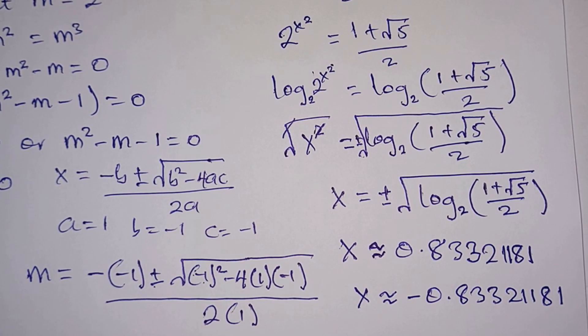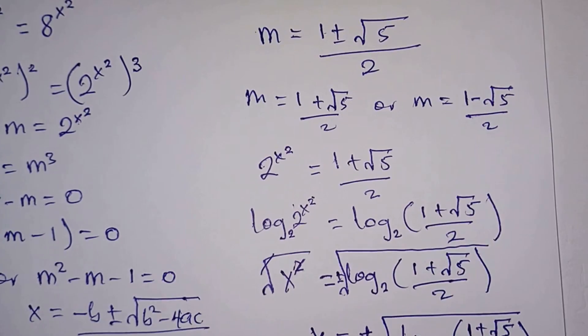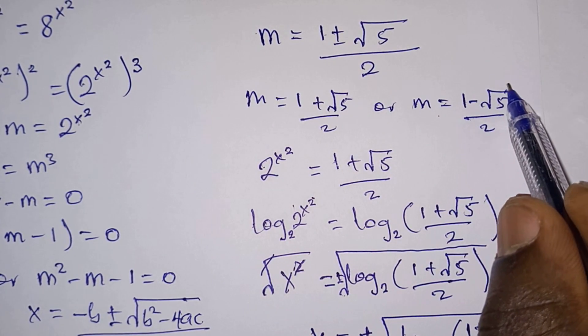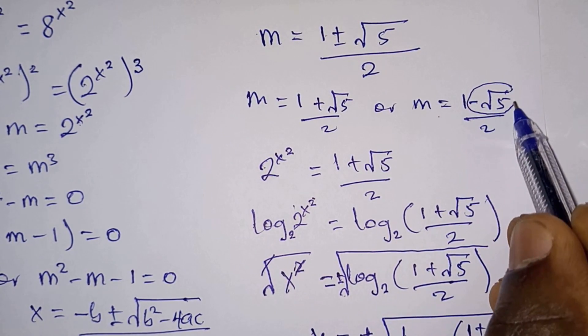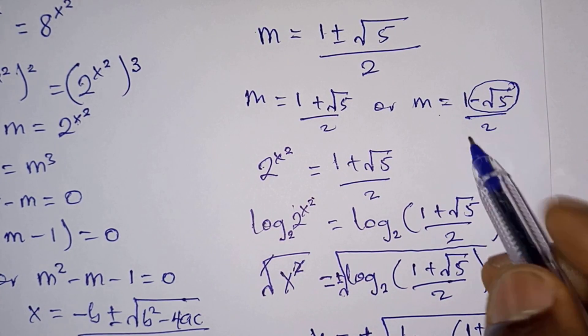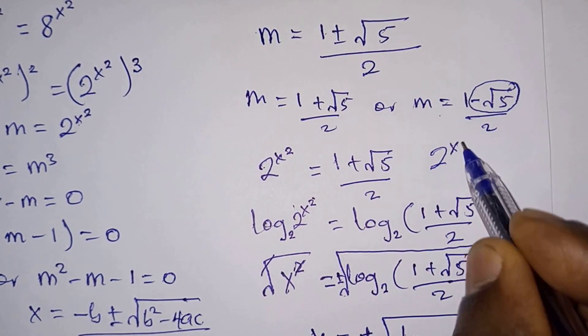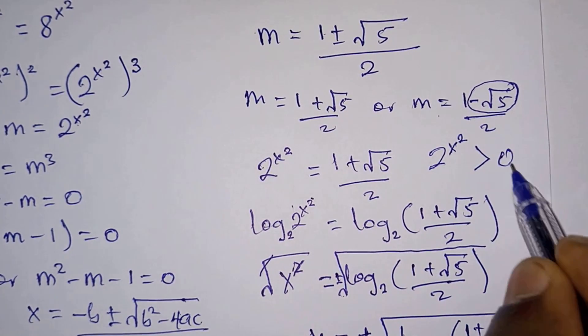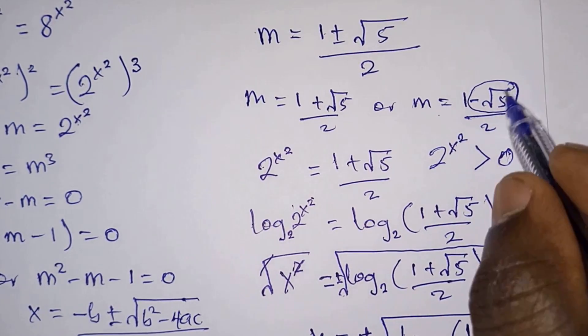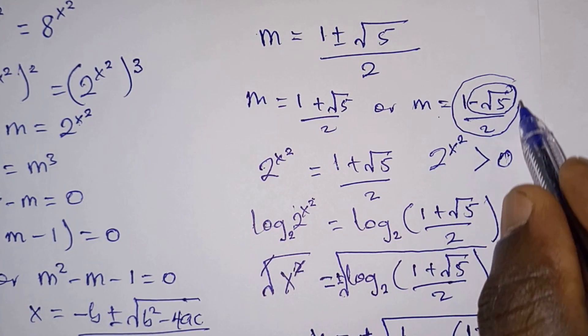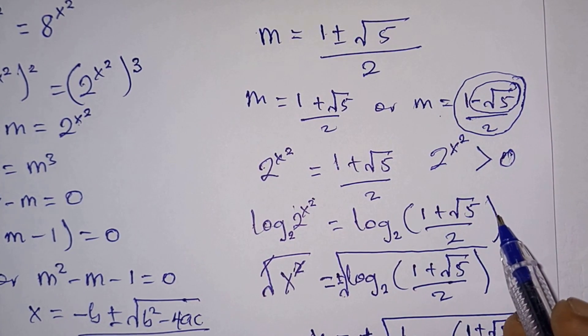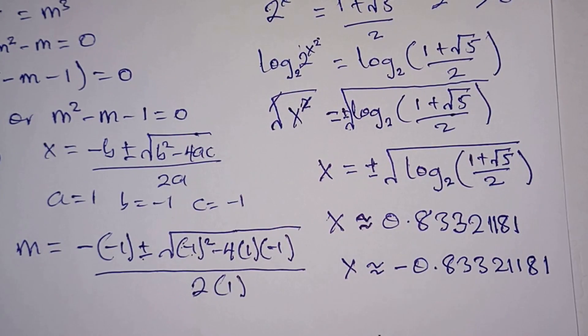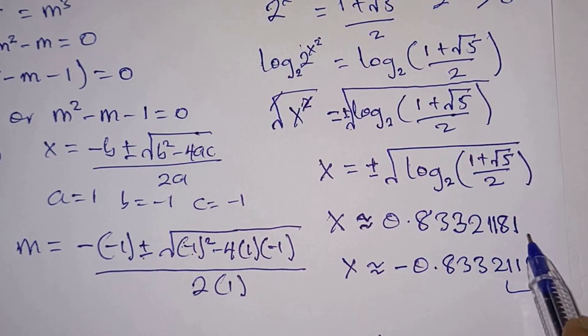So these are the values of x. Now let's come to this equation. Now from this value of m, because of this negative √5, it will make everything negative. But remember 2^(x²) is always greater than 0, it is positive. Since everything here is negative, it means you end up getting complex solution of which we are not interested.